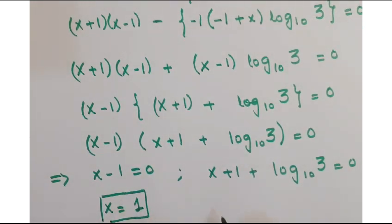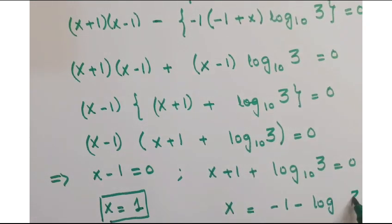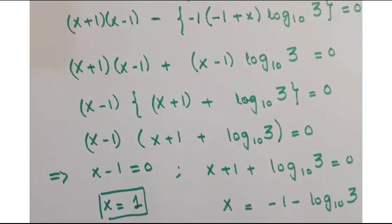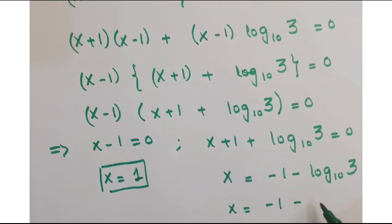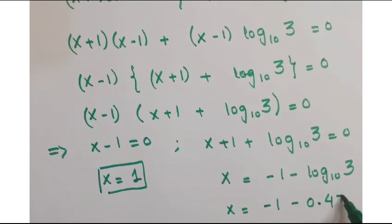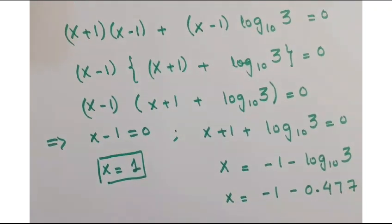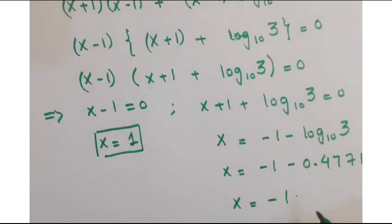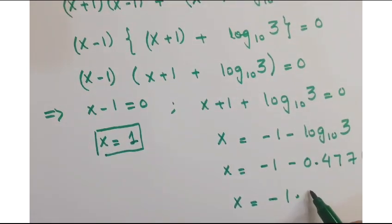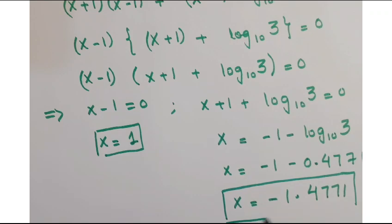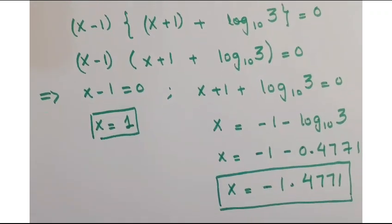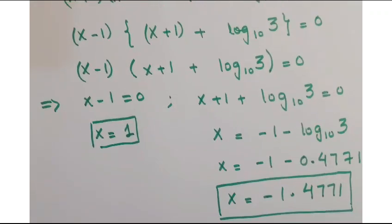And here, just move these two quantities to the right hand side, so x is equals to minus 1 minus log of 3 to the base 10. From a calculator, we get the value 0.4771, and after simplification we get the value of x as minus 1.4771. These are our required answers. I hope you understand it, and if you like it kindly subscribe to my channel. Thanks for watching.